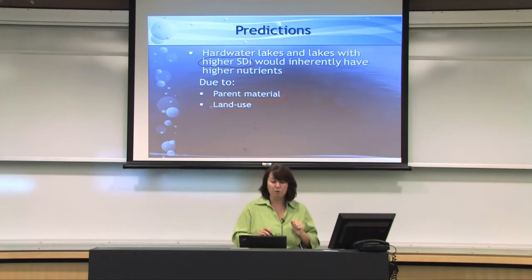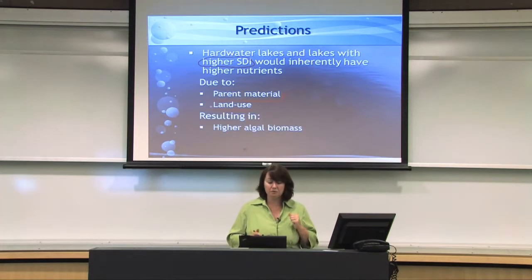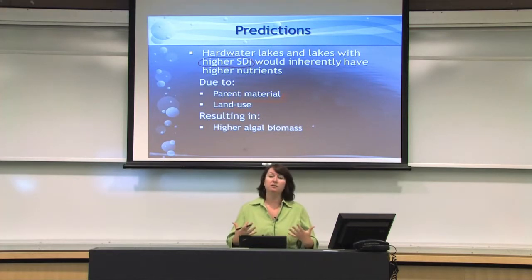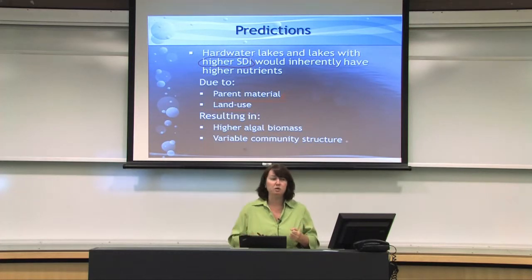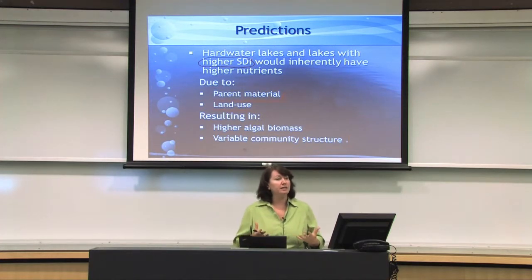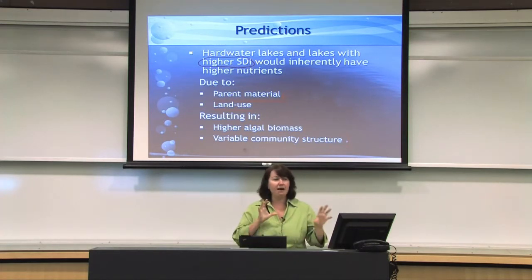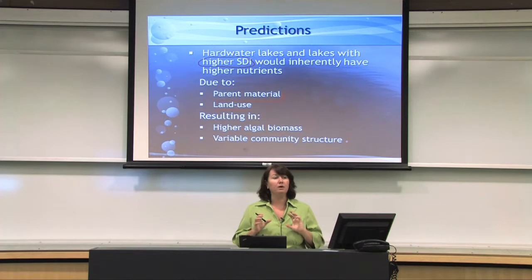Land use is of course going to be important, and in conjunction with geology, we expected higher algal biomass — because if you have higher phosphorus or higher nutrients, algae would respond and be in higher abundance — as well as variable community structure. It's difficult to predict community structure precisely, but you'd expect high-nutrient lakes to differ, and since algae are sensitive to pH, you'd expect different algal communities in soft water versus hard water lakes.